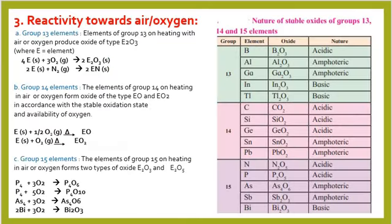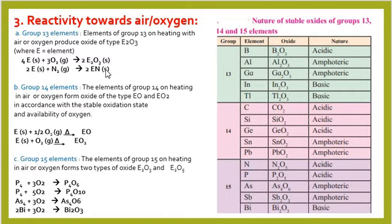Now, the reactivity towards oxygen or air. Group 13 elements react with oxygen present in the air as well as nitrogen to form their respective oxides and nitrides. This happens only when we heat the element with air. The general formula of oxide is E2O3 and the general formula of nitride is EN. For example, aluminium on heating with air forms Al2O3 and AlN respectively.